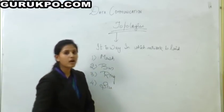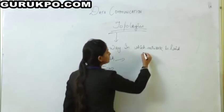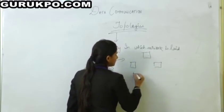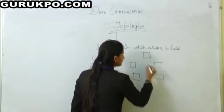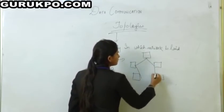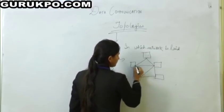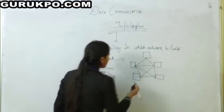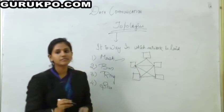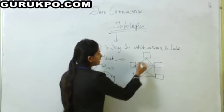In mesh topology, all stations are connected with each other for transmitting data, through which each station connects with another station. Transmission of data is flexible. Nodes are connected with each other, so data transmission from one place to another is easy.